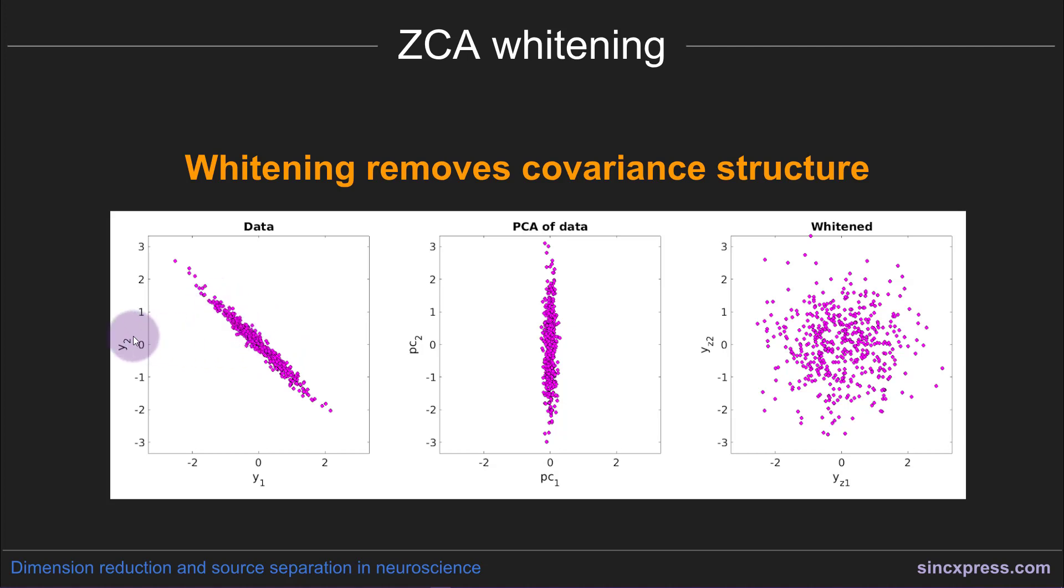So if you would re-plot these data in PC space, principal component space, that dataset would look like this. So you can see that all that's happened is it's been rotated, but it's still strongly correlated these data.